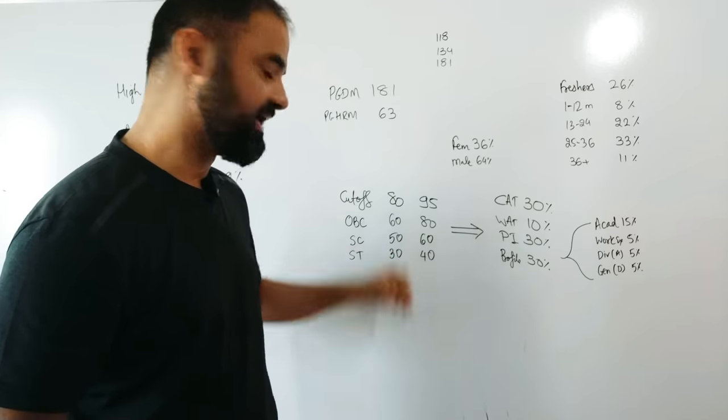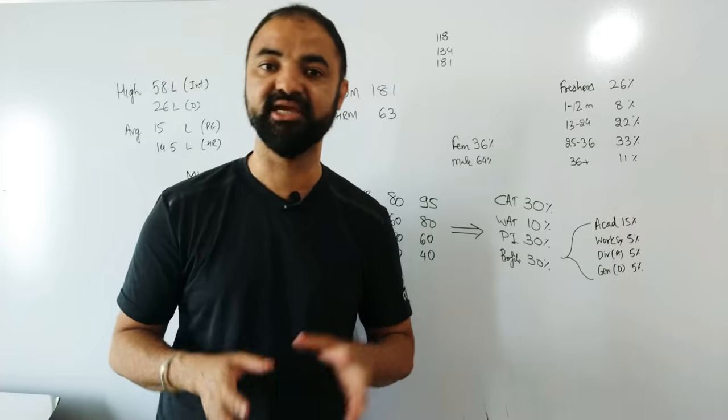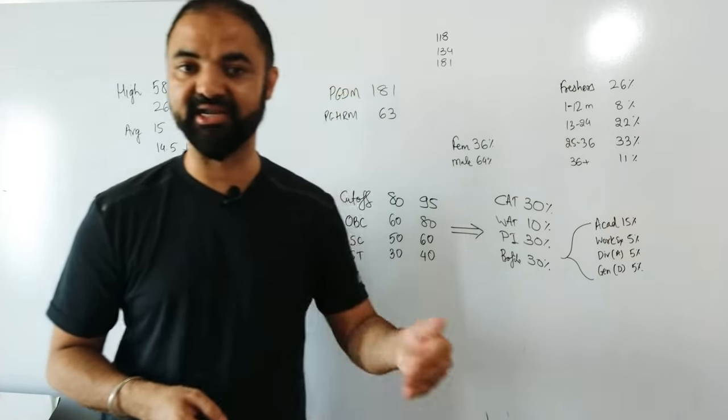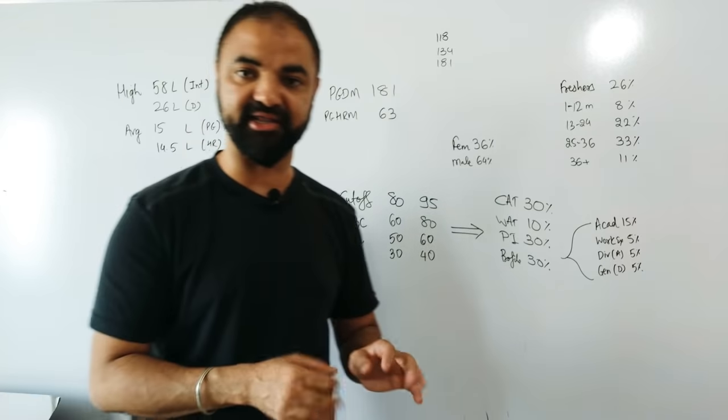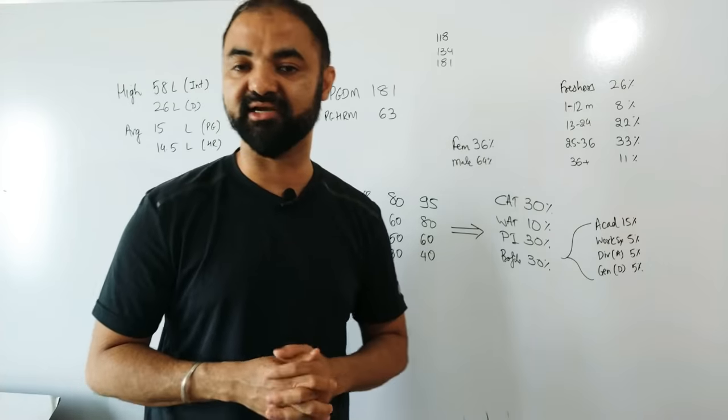If you score 80, 80, 80 in all three sections, you will score 90 percentile plus overall. That's my thumb rule. If you can touch even one section at 90 percentile, you will clear the 95 percentile overall.